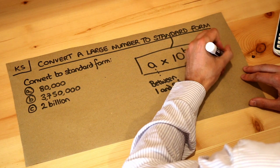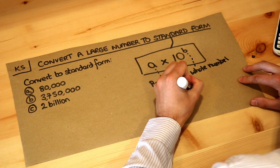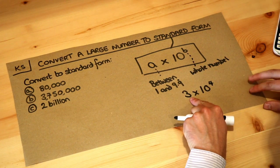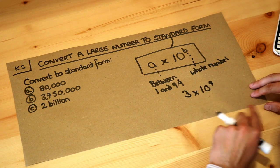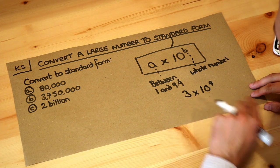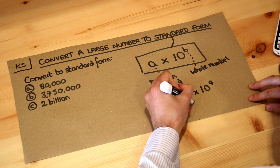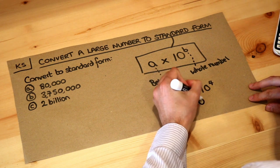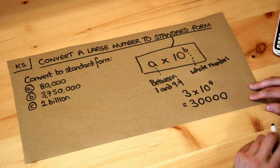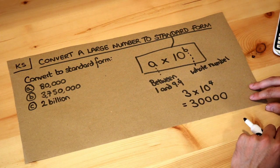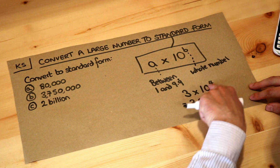For example, if I had 3 times 10 to the 4, that's a number between 1 and 10, that's fine, and that's a whole number. 3 times 10 to the 4 means 3 times 10 four times, so that would be 3 times by 10 once, twice, three times, four times. So 3 times 10 to the 4 would be 30,000, and that would be in standard form.